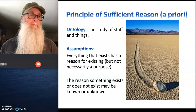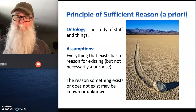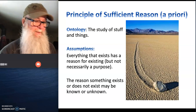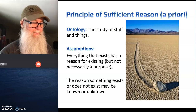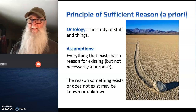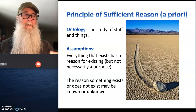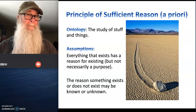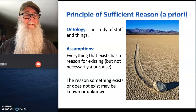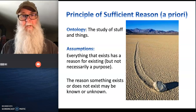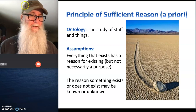Let's get weird. Let's look at the principle of sufficient reason. This is a principle that applies in ontology, which is just the study of stuff — what kinds of things exist and how they exist. The principle of sufficient reason says everything that exists was caused to exist. It might not exist for a purpose or an intention, but we know that the things that exist do so because something caused them to exist, even if we don't know what that cause was.